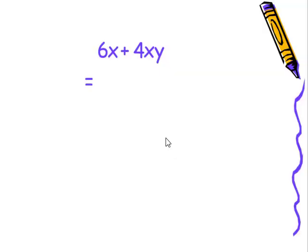What's six x plus four x y? And again, variables have to be exactly the same. In this case, this is an x and that's an x, but this also has this additional y. So the variables are not exactly the same. So it's just six x plus four x y.